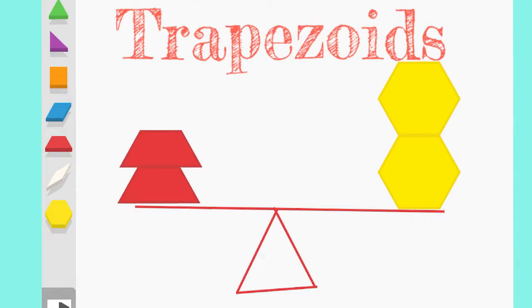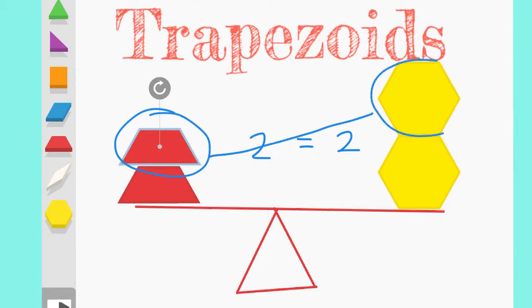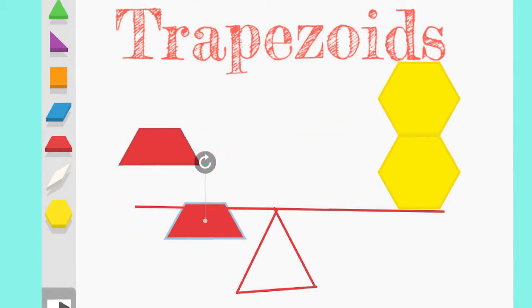This is equal, right? Because two is equal to two. What do you think? Is it equal? You're right. This trapezoid is not the same size as my hexagon. So let's think. How many of these trapezoids would I need to be equal to these two hexagons?